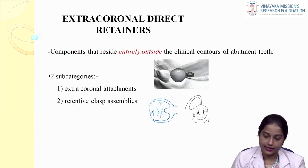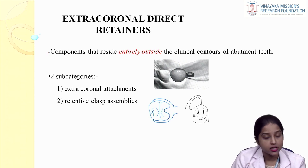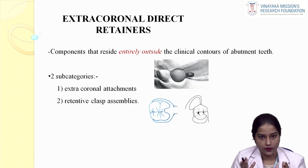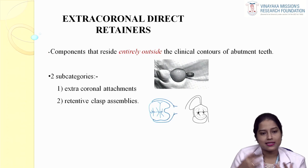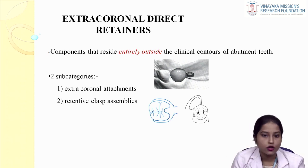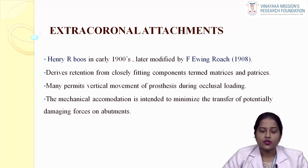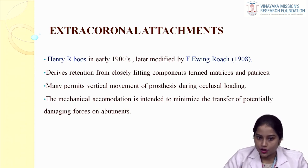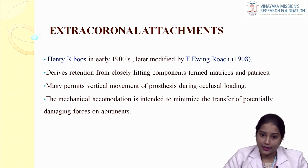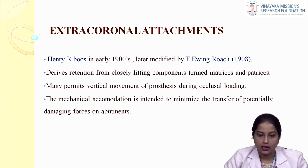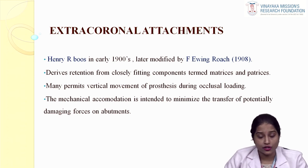Coming to extracoronal direct retainers, these retainers lie completely outside the contours of the tooth and are divided into a clasp assembly or an attachment. Extracoronal attachments are also a two-component system — matrix and patrix — which provide retention during insertion. But in extracoronal attachments, it is vice versa from intracoronal: a patrix or male component is attached outside the clinical contours of the tooth, whereas the matrix or female component is attached to the RPD. Extracoronal attachments are mostly semi-precision attachments because in distal extension cases we need to dissipate forces.